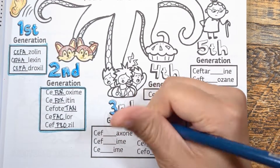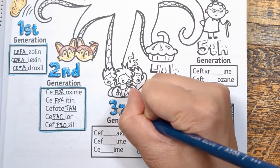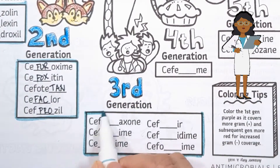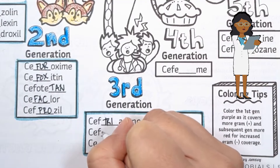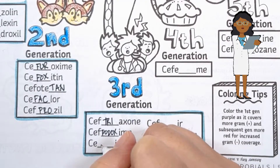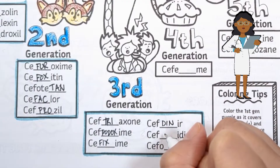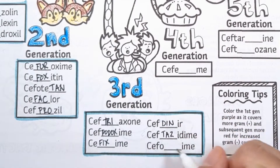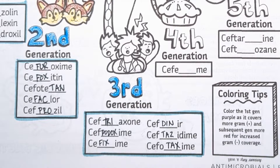For third generation, it's a pretty big class so we have to get creative again. Imagine this mnemonic: three podox for fixin dinner and got tased for not paying taxes. Three stands for third generation cephalosporins, podox is for cefpodoxime, fixin is for cefixime, dinner is for cefdinir, tased is for ceftazidime, and finally taxes is for cefotaxime.